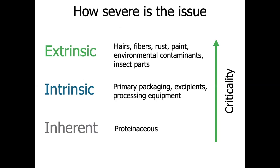It's also important that you can begin quickly answering questions about the particles you find, as they will often lead you down different paths in your process. For example, inherent particles — particles that come from the drug API itself, like protein aggregates — may fall within established limits you already have. So within your following of USP 1790, this might be data that just gets added to your trend data set, and that can be completely fine.